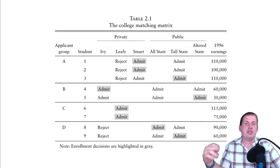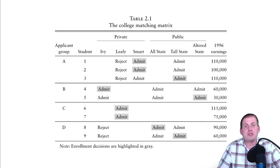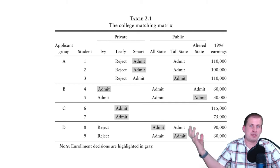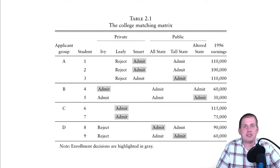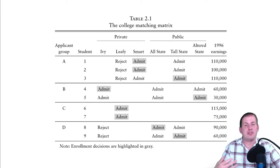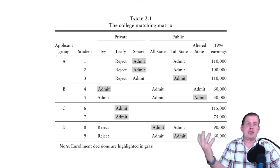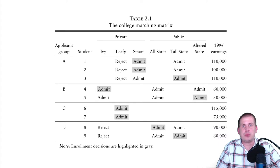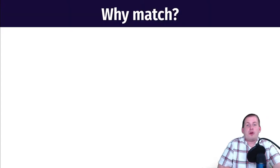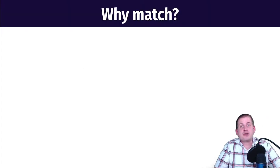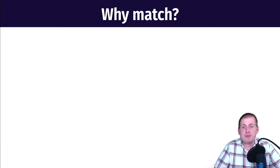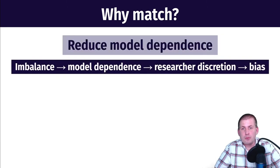The way we adjusted was by getting rid of group characteristics through matching based on group. That's what we're going to be talking about in this section — how we can use matching in a more general sense to get rid of confounding between your treatment and your outcome.